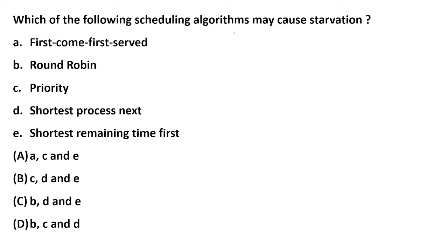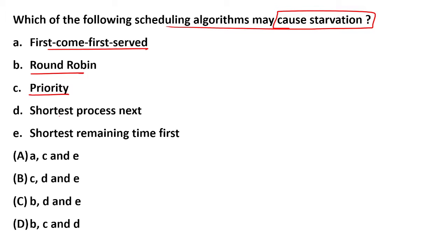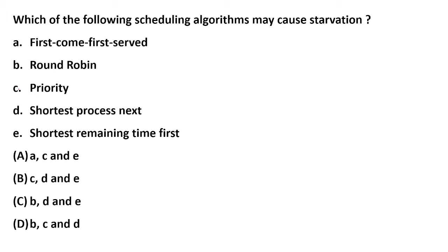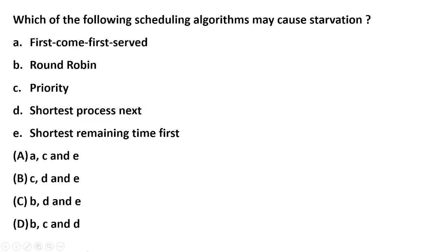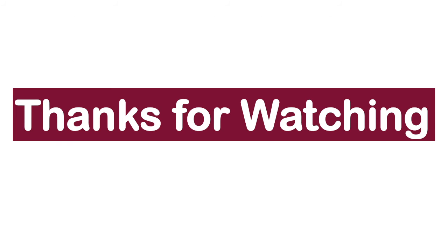Practice MCQ: Which of the following scheduling algorithms may cause starvation? Options: (a) First Come First Serve, (b) Round Robin, (c) Priority, (d) Shortest Process Next, (e) Shortest Remaining Time First. The correct answer is C, D, and E only — priority scheduling, shortest process next, and shortest remaining time first can cause starvation. Thank you so much, and I wish you all the very best.